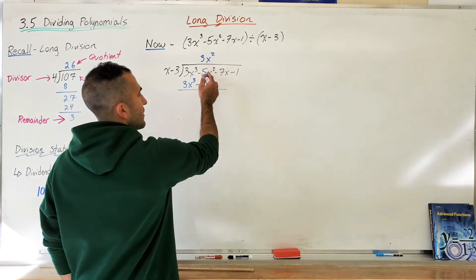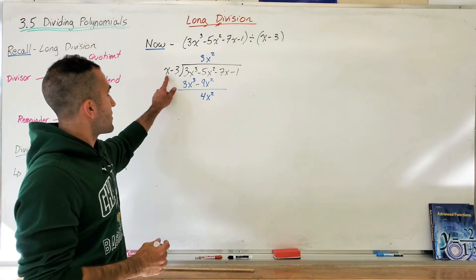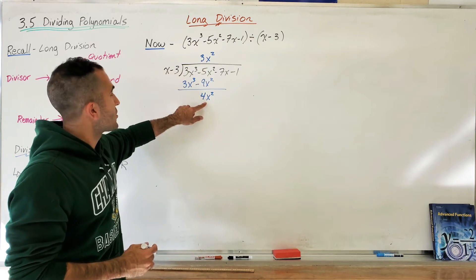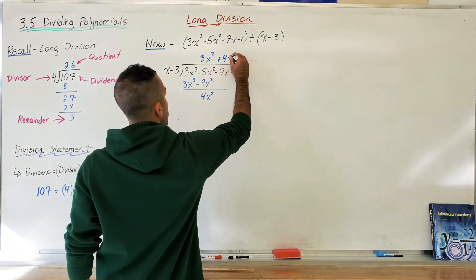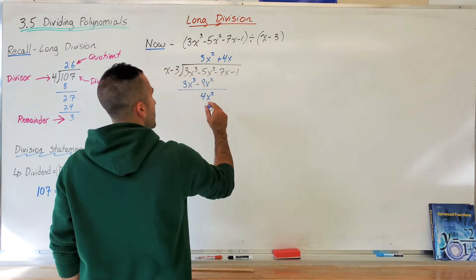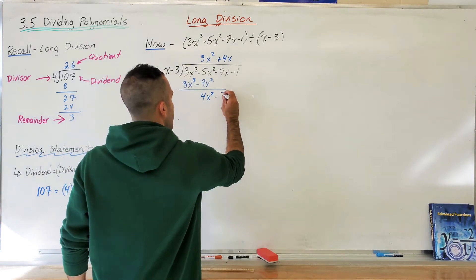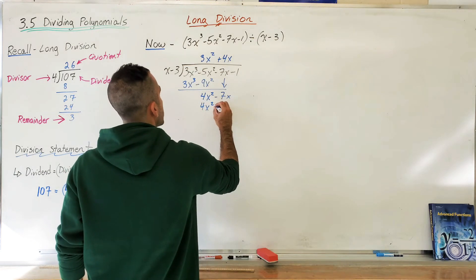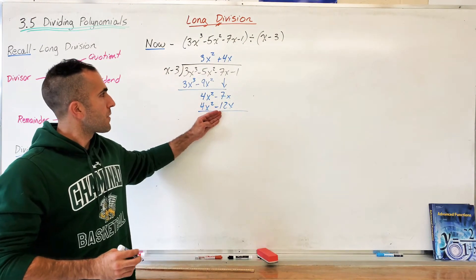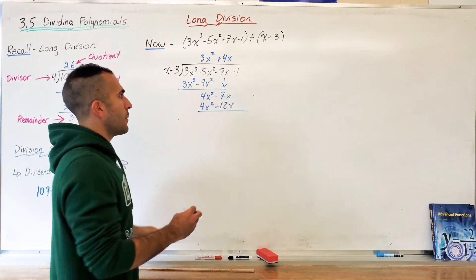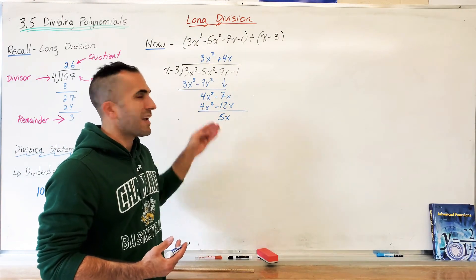Draw a line and subtract. These cancel out. Negative 5 minus negative 9 is positive 4x². Now I look at this x — how do I turn x into 4x²? It needs a 4 and an x, so I need 4x. Multiply 4x by the binomial: 4x² and negative 12x. Wait — I forgot to bring down the negative 7x first.